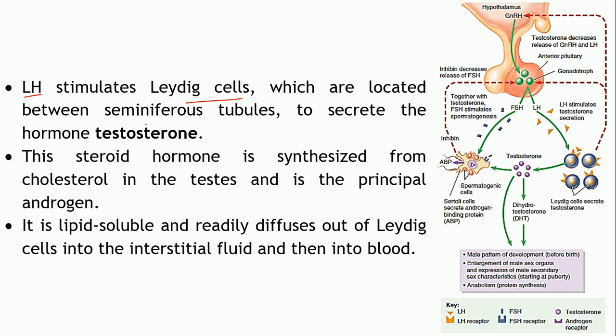LH stimulates the Leydig cells, which are present in between the seminiferous tubules, to secrete the hormone testosterone. These cells have receptors for LH. The LH binds to the LH receptors located on the Leydig cells, stimulating the release of testosterone. The function of the Leydig cell is to synthesize and secrete the hormone testosterone.